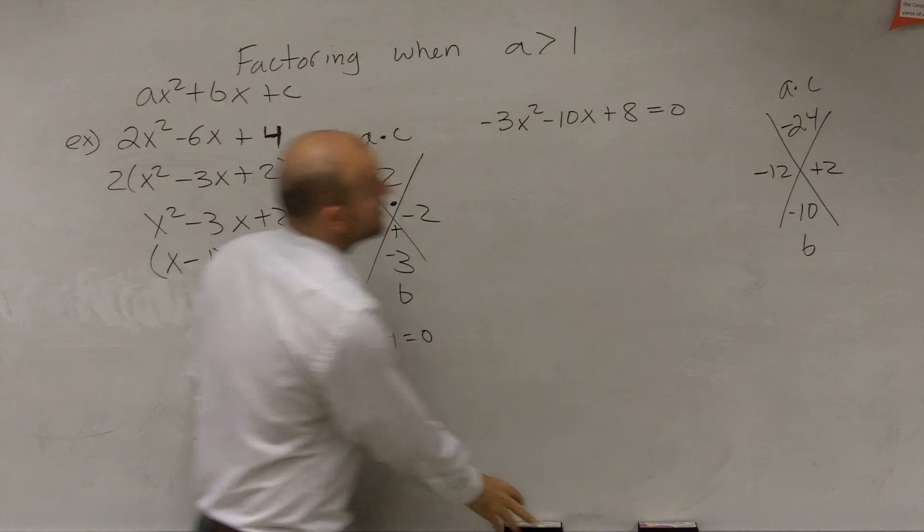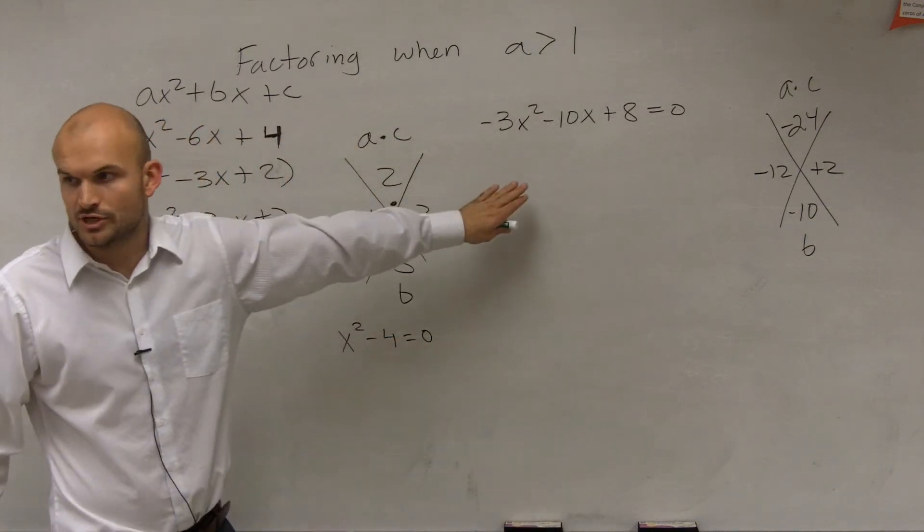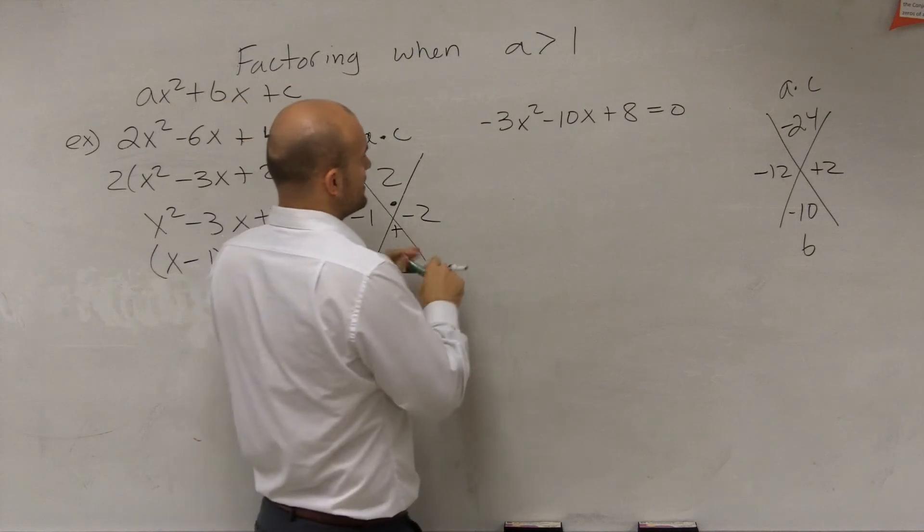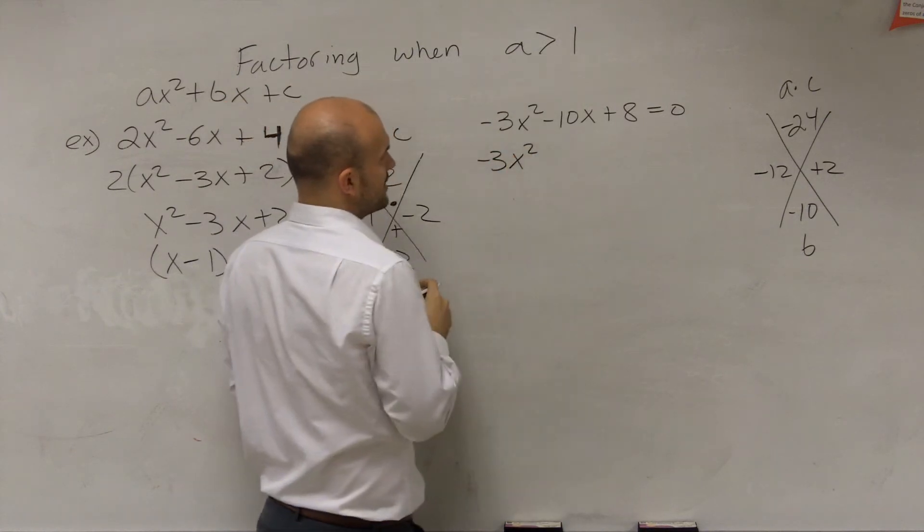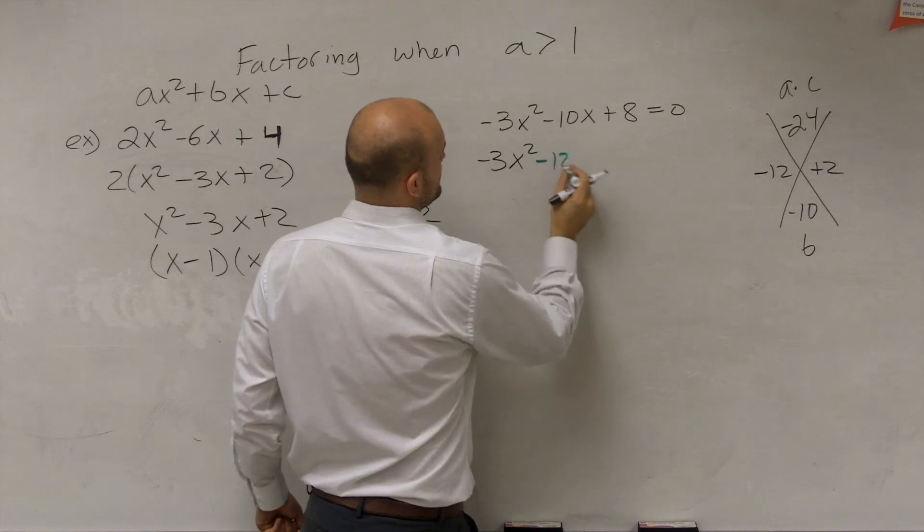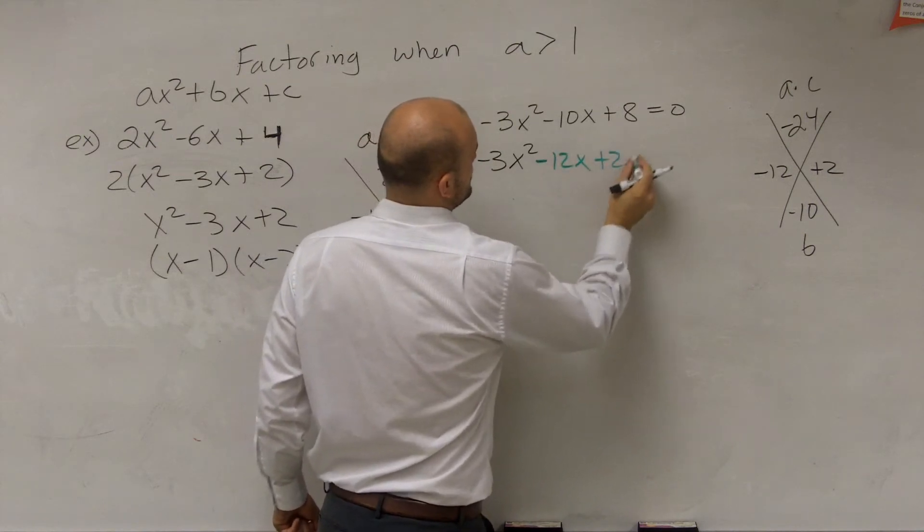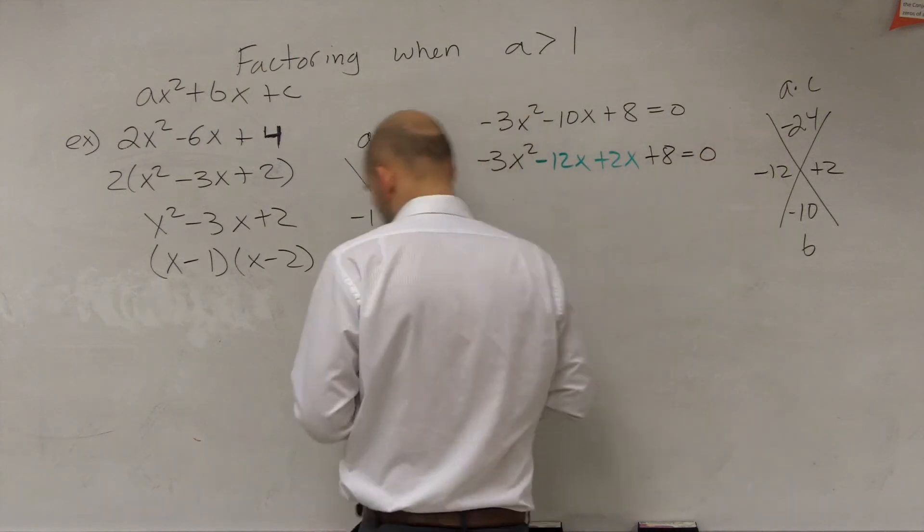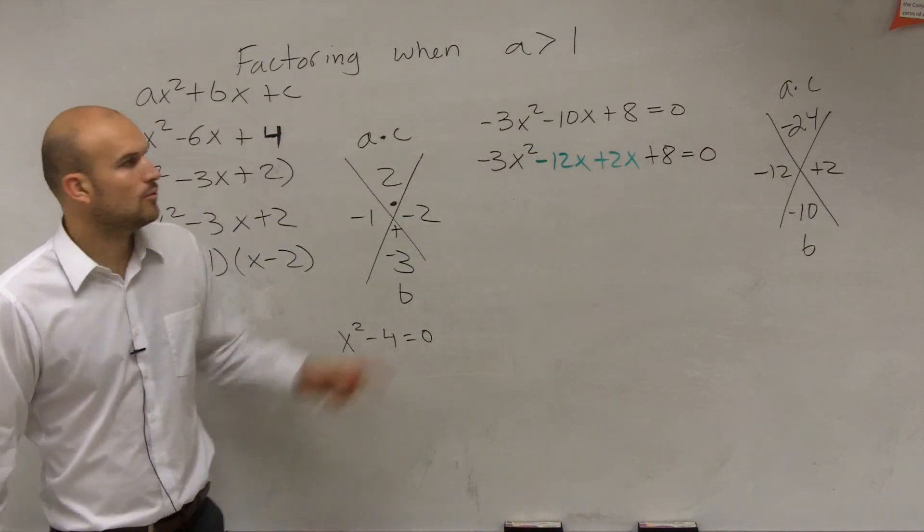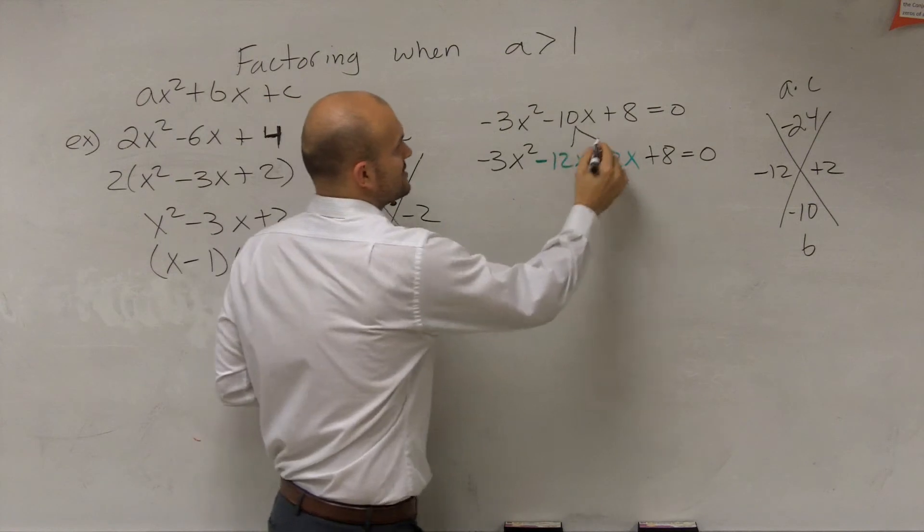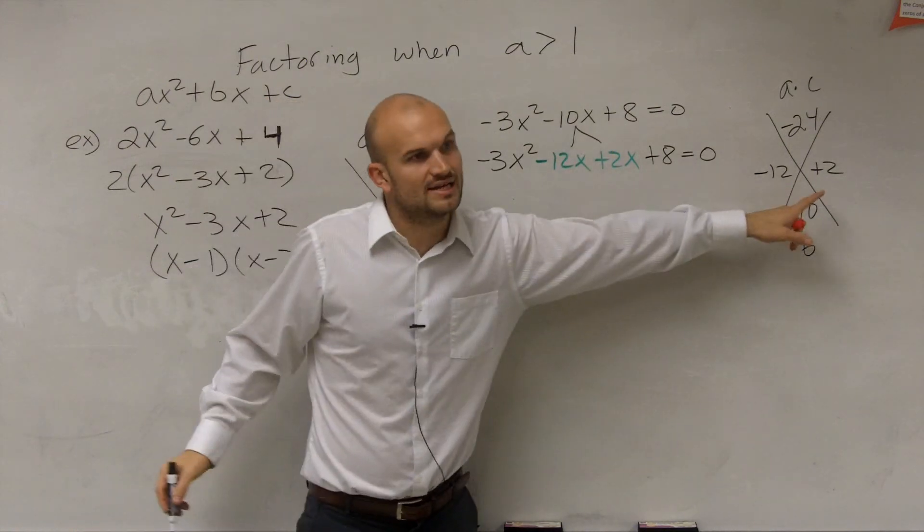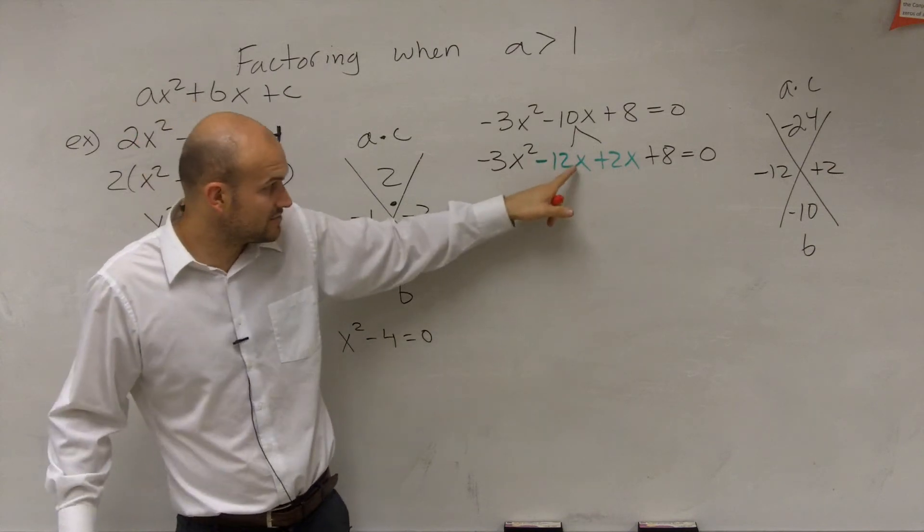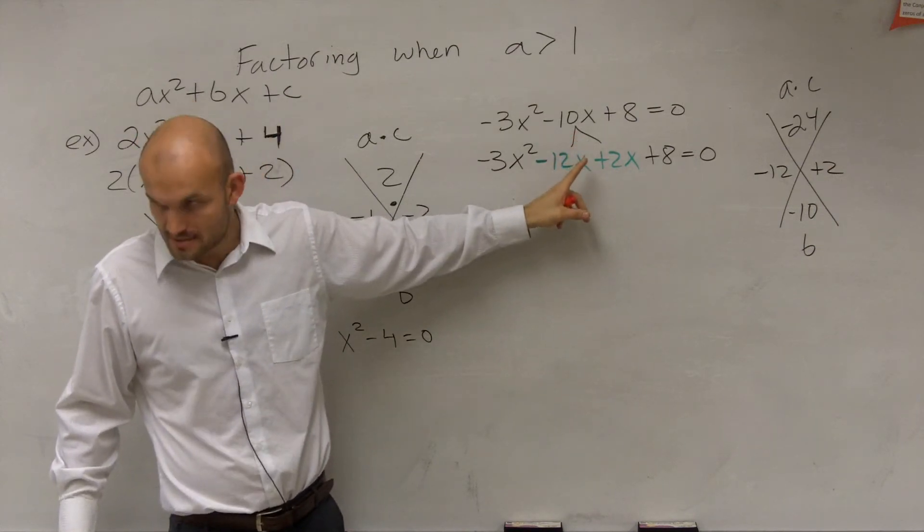How do you find the answer? Rather than setting it up as two factors immediately, we're going to rewrite the equation: -3x² - 12x + 2x + 8 = 0. Notice these two values, -12x and 2x, add to give you your middle term. Does -12x + 2x give you -10x? Yes.